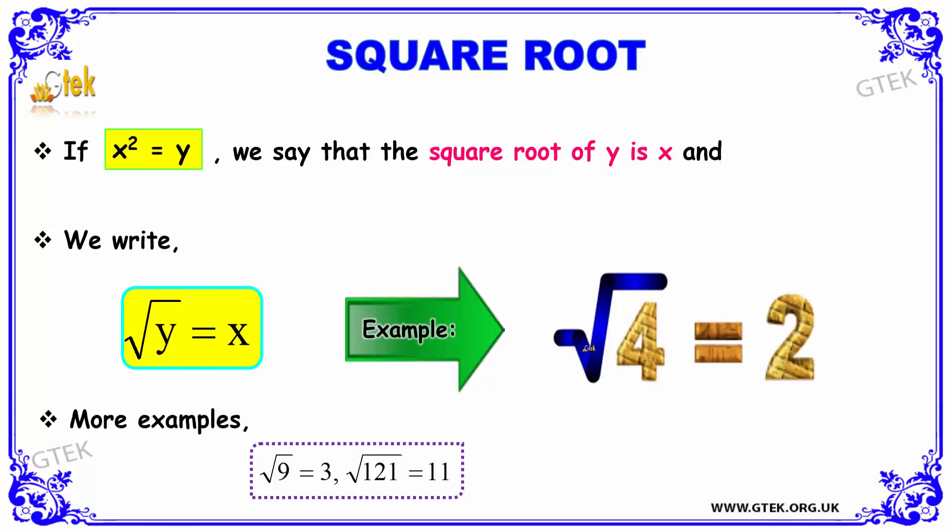Let us see an example. Square root of 4 is nothing but 2 because 2 into 2 will give you the value to be 4. Square root of 9 is nothing but 3 and square root of 121 will be equal to 11 because 11 into 11 is equal to 121.